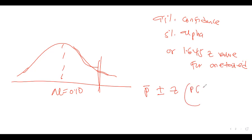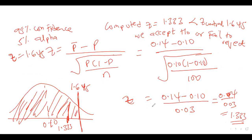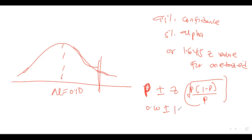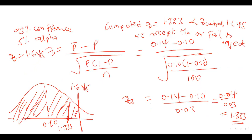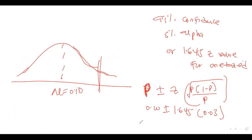The standard error is the square root of P times (1 minus P) all over N, which we already computed as 0.03. For a one-tailed upper test, it is not plus-or-minus — it is just plus. So the upper limit is the population proportion plus z times the standard error: 0.10 plus 1.645 times 0.03.